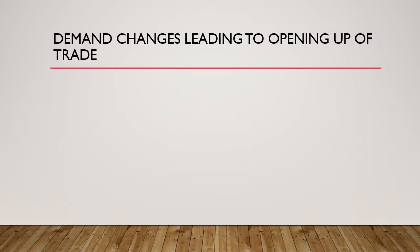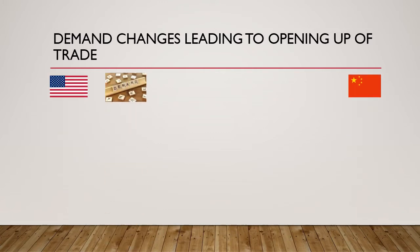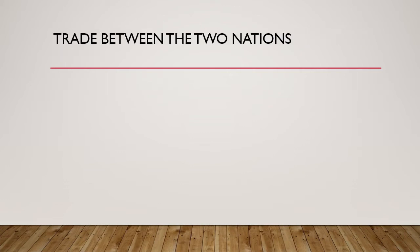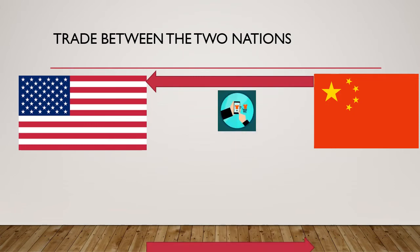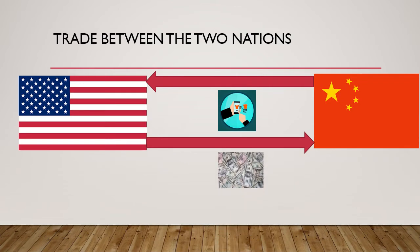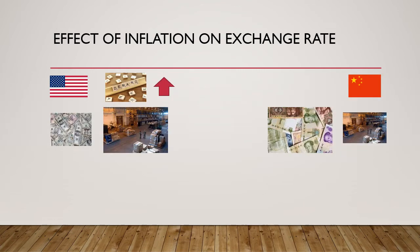Now let's open the economy a little bit. In this case, the American demand for goods and services rises, and supply constraints in America mean that America has to trade with China to fulfill its demand for goods and services. Hence, China now supplies goods to America, and in return America supplies dollars — credit, money — to China. So the demand in America has increased, thereby allowing trade with China.